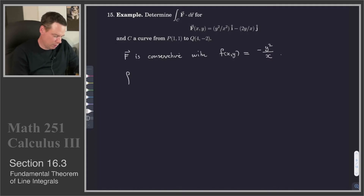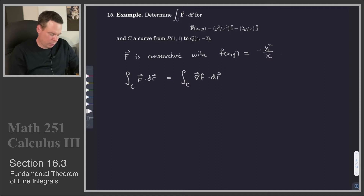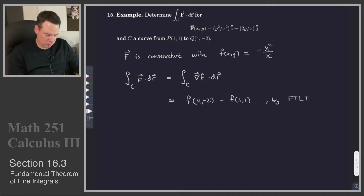So that means the integral of F·dr over curve C equals the integral over C of the gradient of f·dr. And by the fundamental theorem of line integrals, that tells me it's f evaluated at the terminal point minus f evaluated at the initial point.